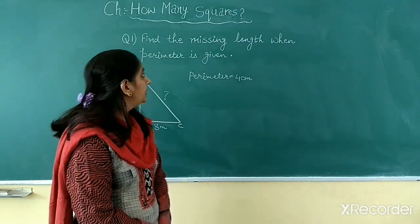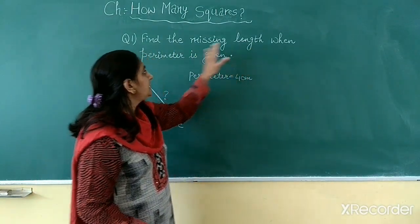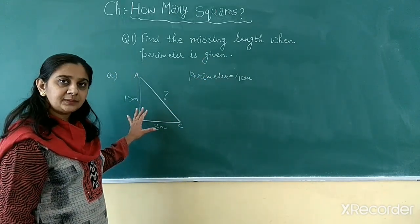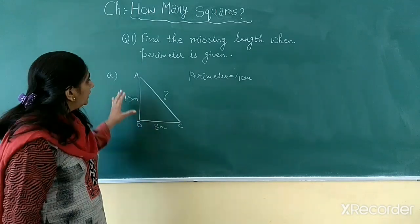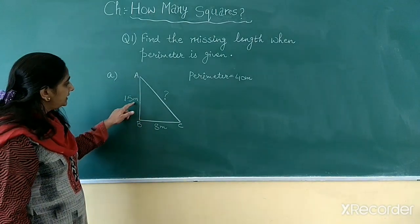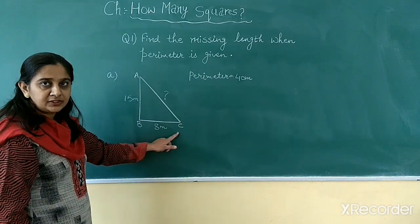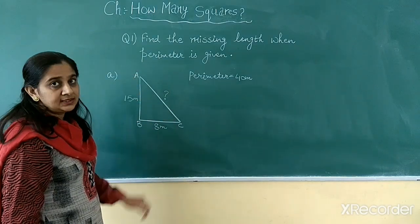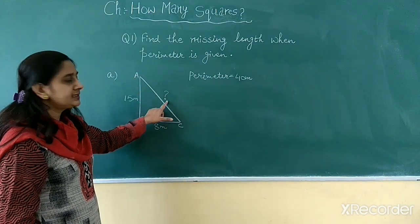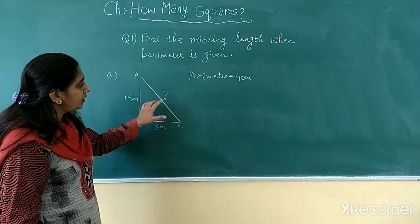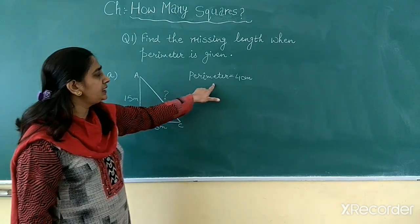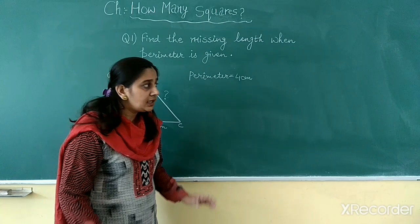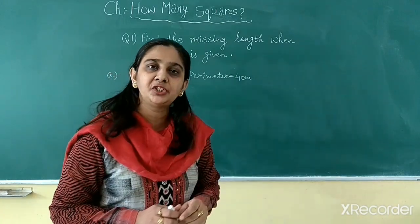Now look at question number 1. When the perimeter is given, we need to find the missing side. Look at this figure — there is a triangle. AB is the first side of this triangle and its length is 15 meter. BC is the second side and its length is 8 meter. CA is the third side and this length is missing. We want to find out this missing length, and the perimeter of this triangle is given to us — it is 14 meter.